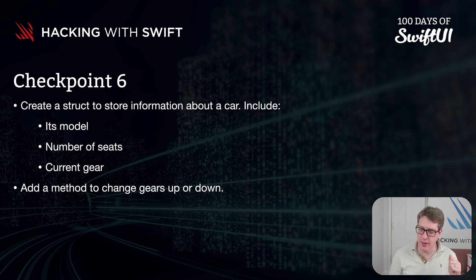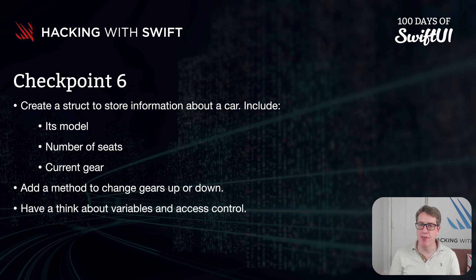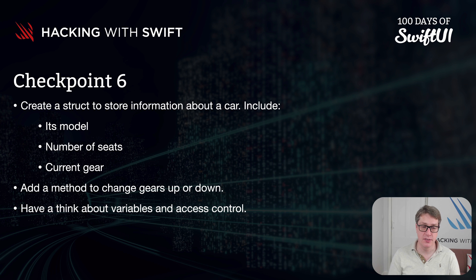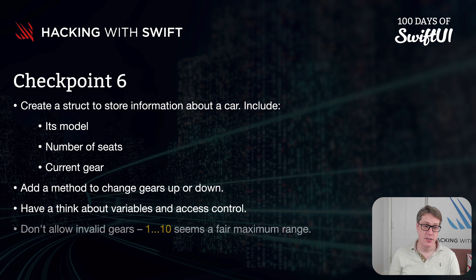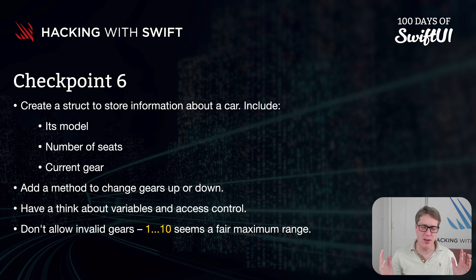Along the way, think about variables and access control. What data in our properties should be variable versus constant, and what data should be exposed to the world for modification? Should the gear changing method validate its input or not? A range of one through ten makes sense for gears — you could do zero for neutral, or eleven for some monster trucks, but one through ten covers basically every car in existence.